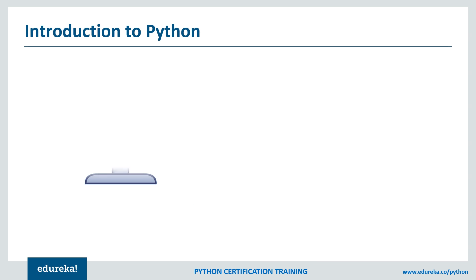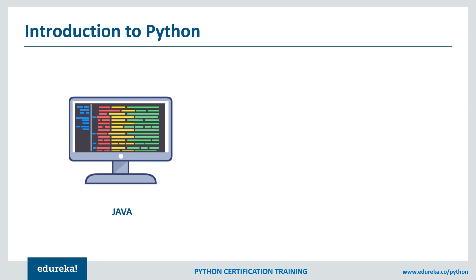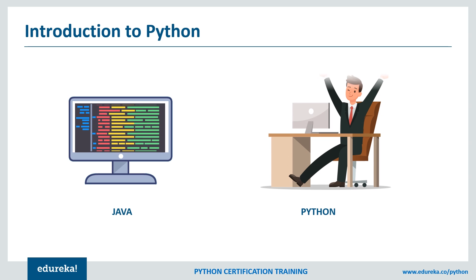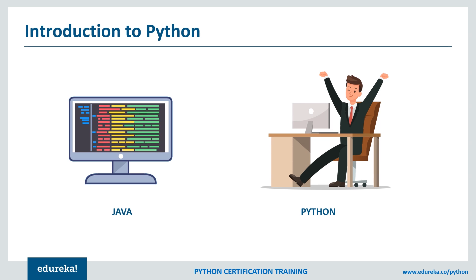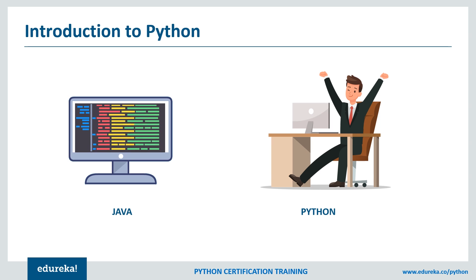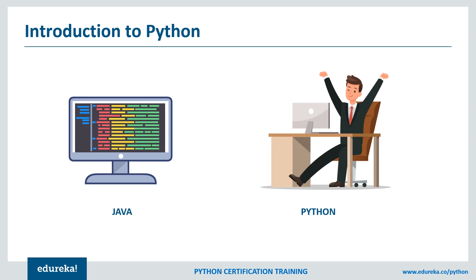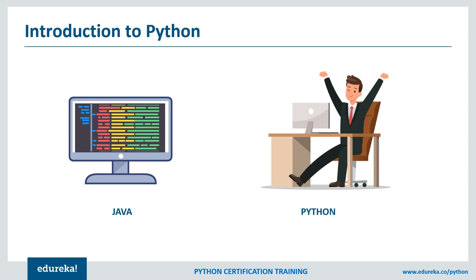Everybody can learn Python — even children. We can use Python as an object-oriented programming language or as a procedure-oriented language. We can run it on different platforms: Windows, Linux, and Mac. If you're writing a program in Java with 50 to 60 lines of code, you can do the same thing in Python with maybe 10 or 15 lines, giving Python an edge over other programming languages.